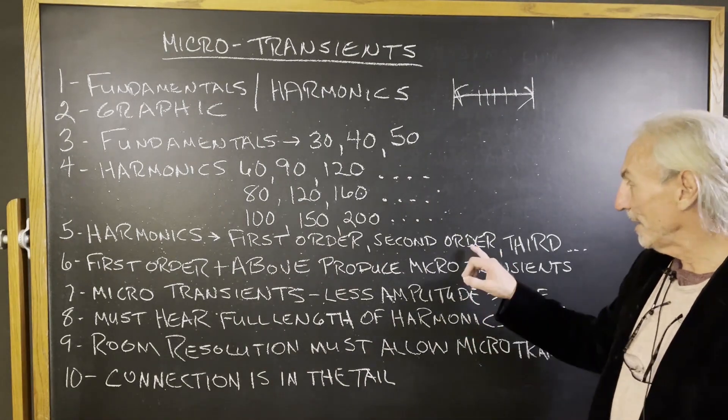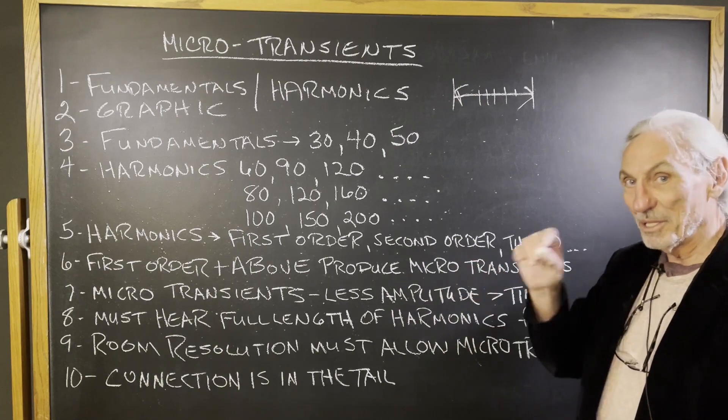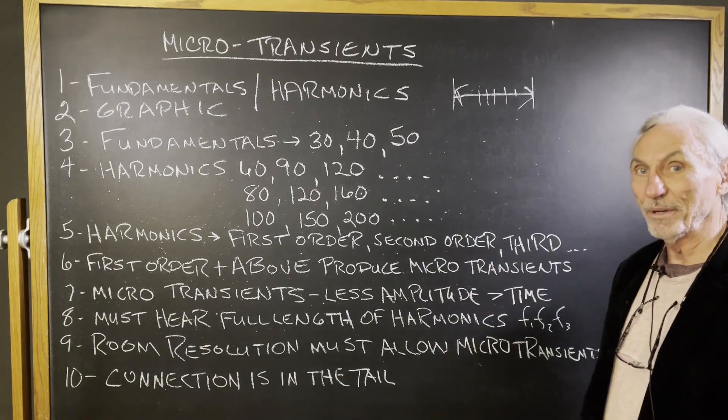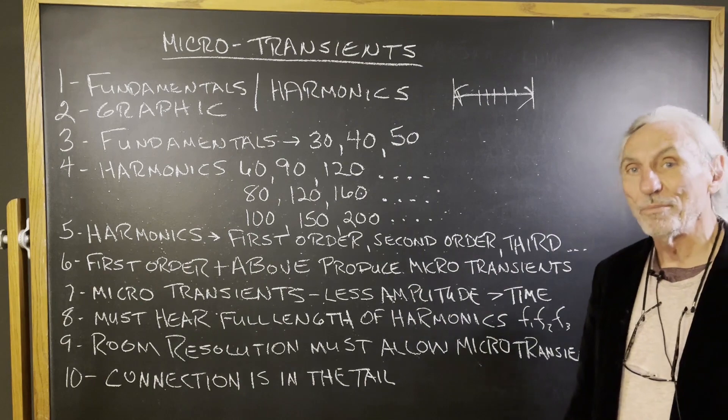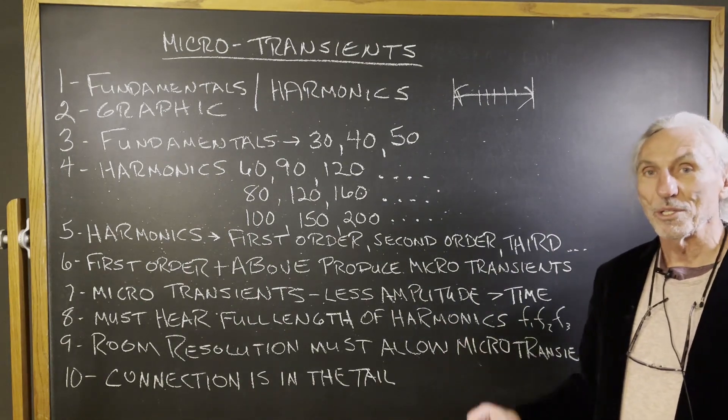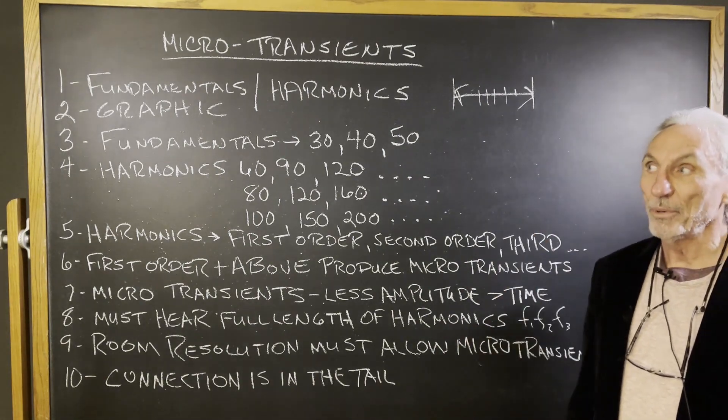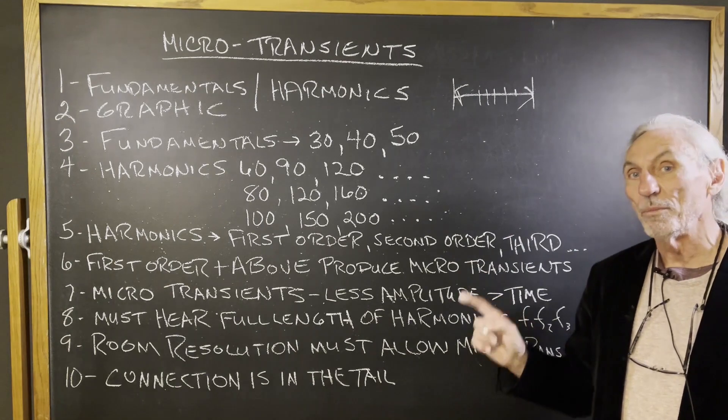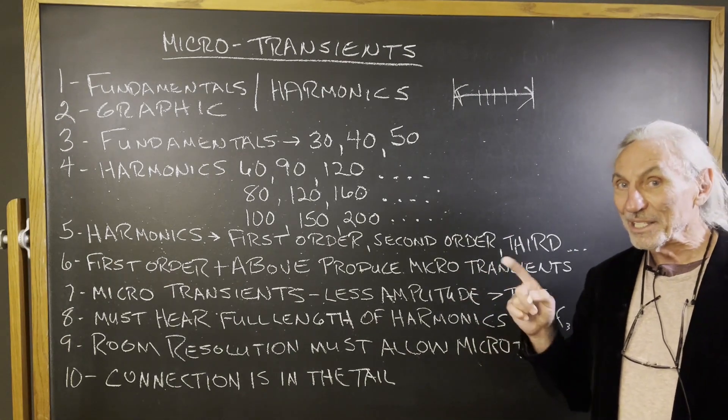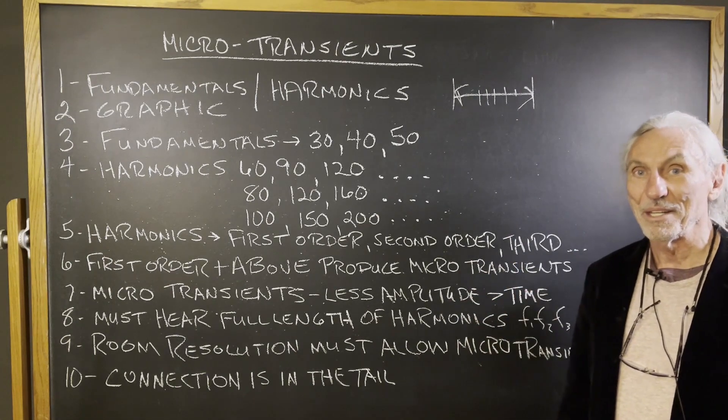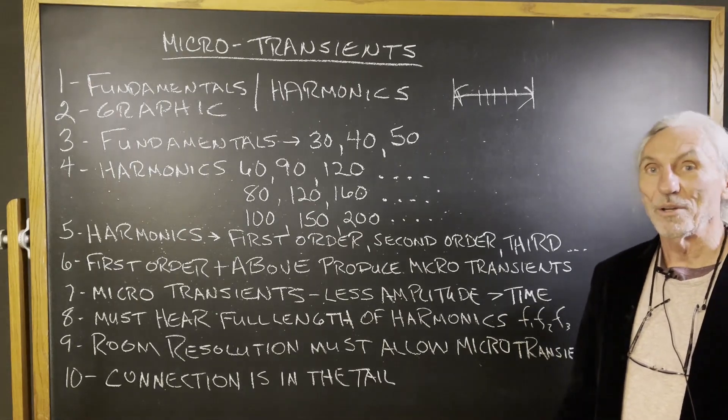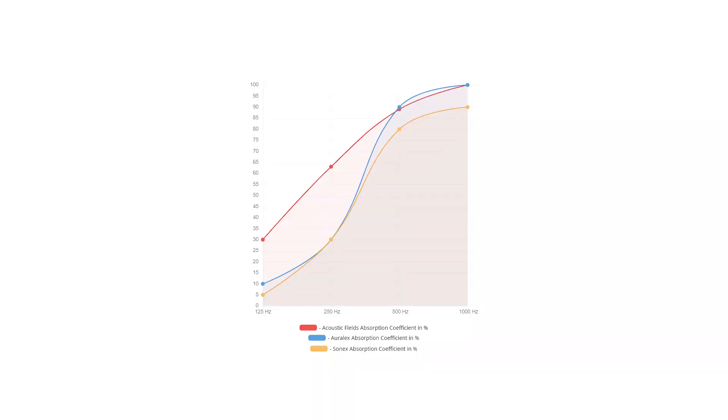And then between the first order and the second order, there's these micro tonal variations. And that's why it's so important to have a really high resolution in your room. That's why it was so important to get that curve on our foam from 125 to 500 because there's a lot of microtransients in that area. You can see here in our foam graph how smooth our 125 to 500 is. And that's the magic area when it comes to voice.